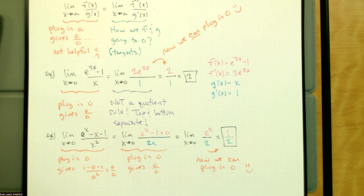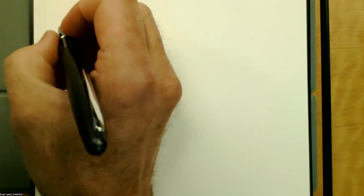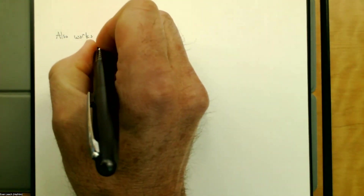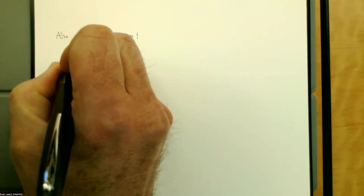The same thing happens if we have infinity over infinity. This also works for a being infinity — L'Hopital's rule applies when the limit gives infinity over infinity as well.